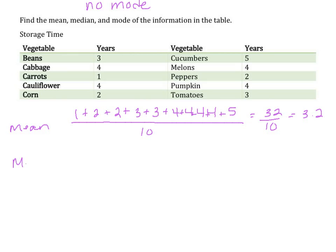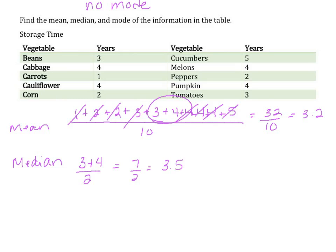The median is the number in the middle. Since they're already arranged, cross one from the front and one from the back until we reach the middle. Since we land on 3 and 4, we add 3 plus 4 and divide by 2, which is 7 over 2, or 3.5. The mode — the value that happens most often — is 4, since it appears four times.